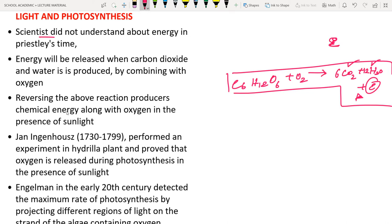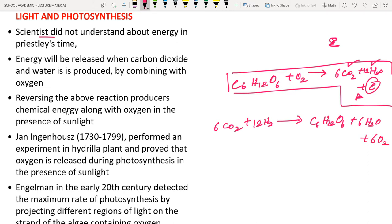Photosynthesis: 6CO2 + 12H2O → C6H12O6 + 6H2O + 6O2. This is the complete photosynthesis reaction occurring in the chloroplast, driven by sunlight and chlorophyll. Cellular respiration is the reverse, occurring in the mitochondria.